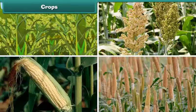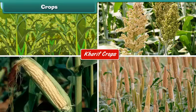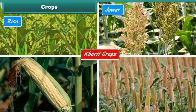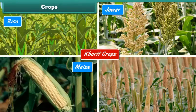The crops which are grown in summer are called kharif crops, for example, rice, jowar, maize, and bajra.